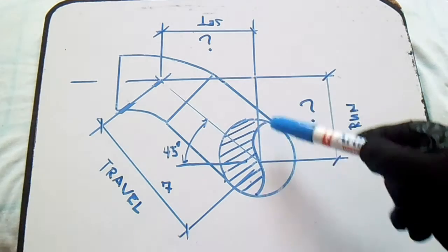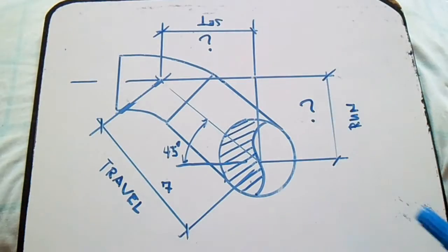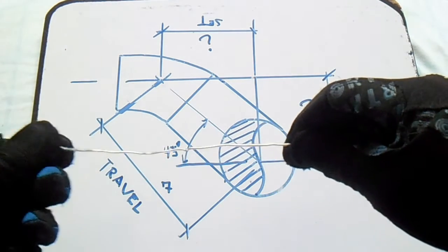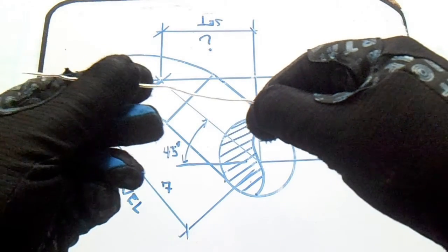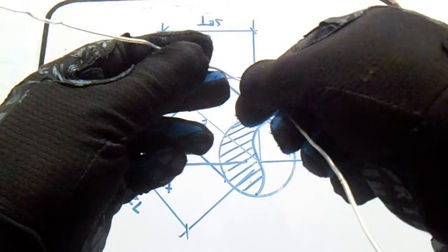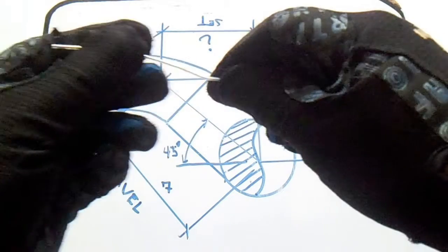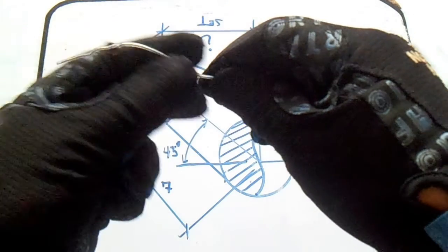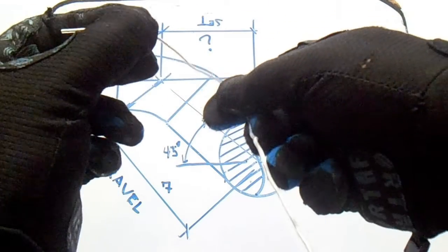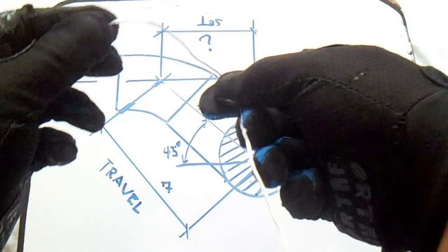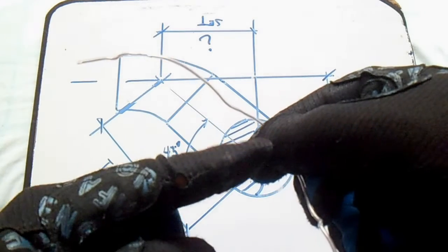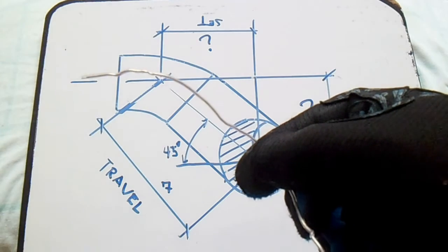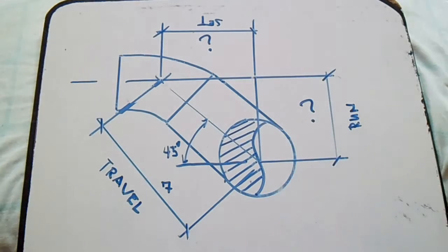First, we count how many fittings. I have a wire here and I'll bend it to count them. We have one 45-degree fitting, a spool, and another elbow. So in total, fittings are one, two — we have two fittings.